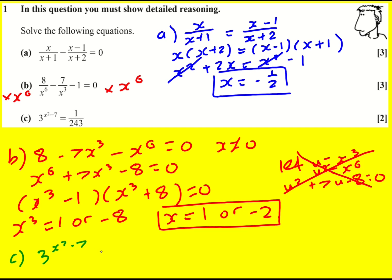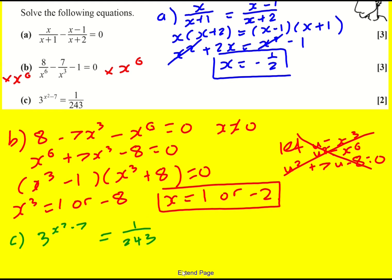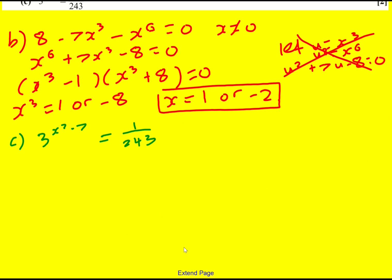3 to the power of x squared minus 7 equals 1 over 243. Now x is in the exponent here so you might be tempted to take logs however you don't need to. I will go through a method with logs involved but a good shout is to first of all just see if 243 can be written as the power of 3 because that would make life easier.